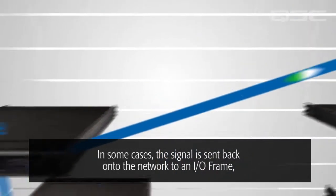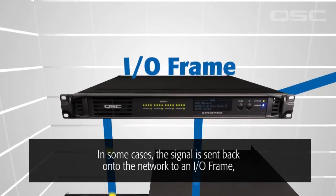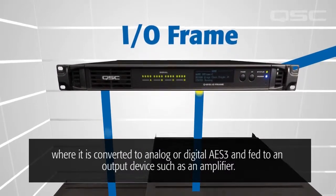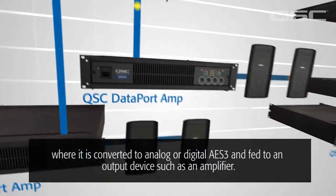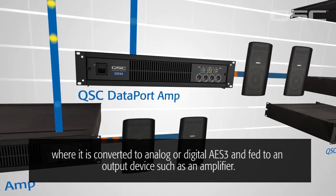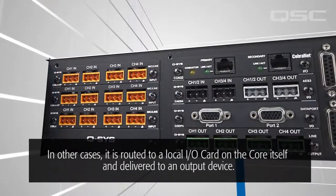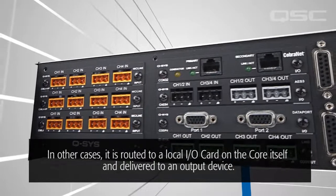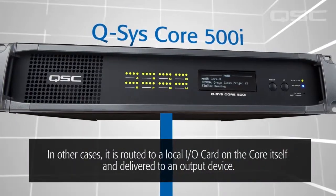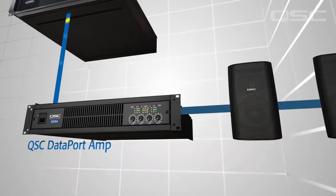In some cases, the signal is sent back onto the network to an I/O frame, where it is converted to analog or digital AES-3 and fed to an output device such as an amplifier. In other cases, it is routed to a local I/O card on the core itself and delivered to an output device.